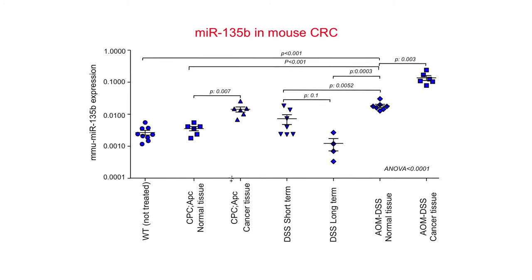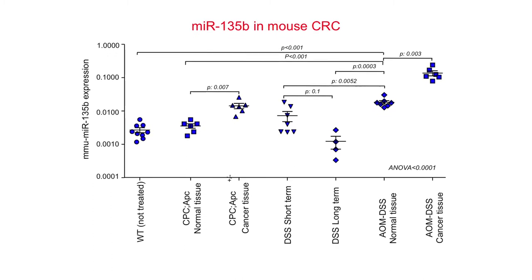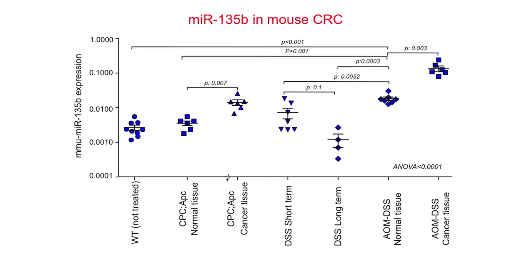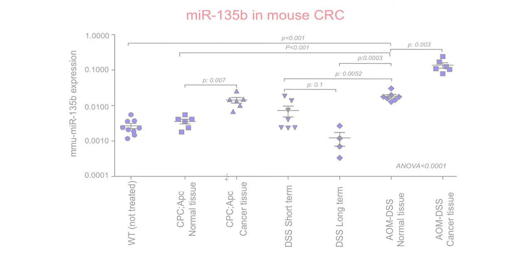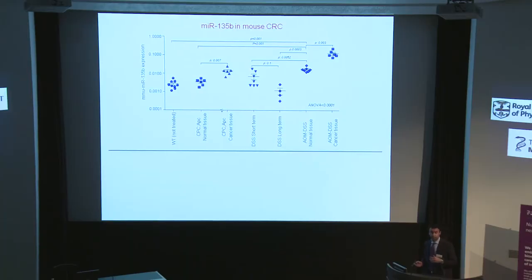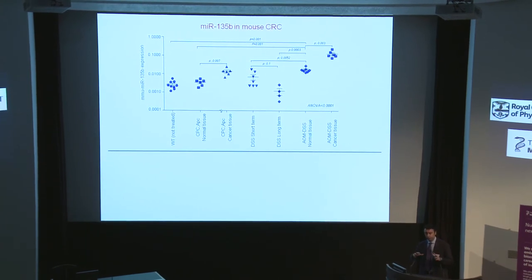We moved ahead validating our finding by real-time PCR. This slide gives you two pieces of information: first, MIR-135b is overexpressed in cancer compared to normal tissues in both models. The other important observation is that cancers from the AOM-DSS model — the inflammation-related model — express higher levels of MIR-135b, suggesting that there is a kind of sequence in the acquisition of MIR-135b overexpression through different mutations.